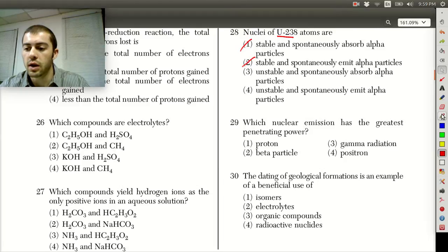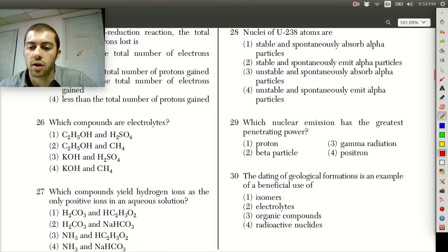So if we look at this, the first thing we can say is that nuclei of these uranium atoms have to be unstable because they are radioactive, which means that by definition they are unstable.